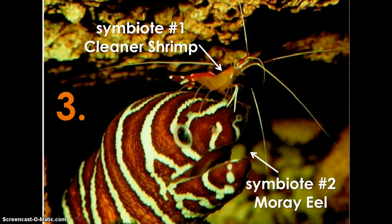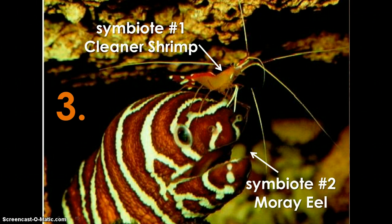Example number three: symbiote number one is a cleaner shrimp, and symbiote number two is a moray eel. These two organisms share the same underwater burrow in the sand. The moray eel lives in the back of the cave while the cleaner shrimp lives in the front. The cleaner shrimp watches guard, using its long antennae to sense possible danger and maintains the cave opening, while the moray eel serves as protection because it is much larger.